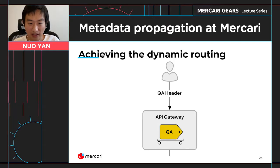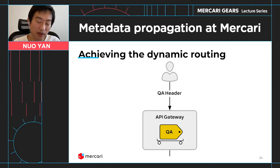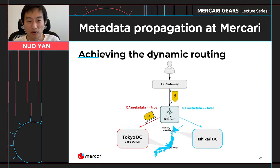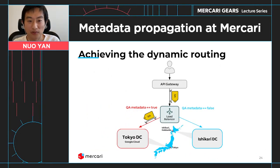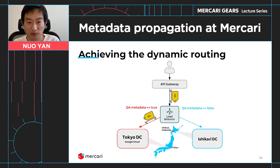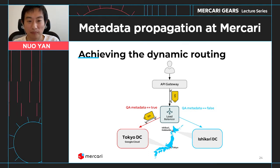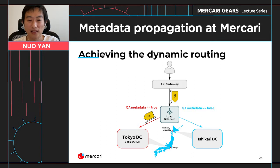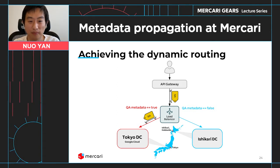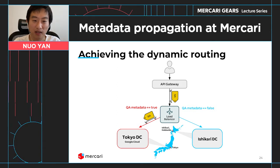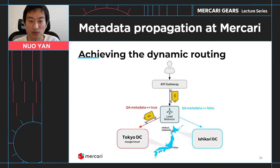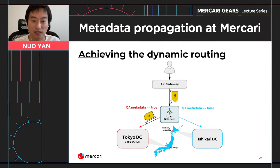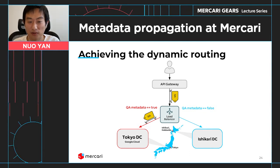Once the gateway gets such information — the QA header and that it's internal — it determines this is an internal testing request. It then attaches a QA metadata to the request. And that QA metadata, by using the metadata propagation infrastructure, is propagated into each of the downstream services until the end.